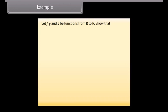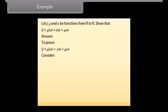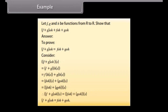Example: Let f, g, and h be functions from R to R. Show that (f + g)∘h = f∘h + g∘h. Answer: To prove, (f + g)∘h = f∘h + g∘h. Consider (f + g)∘h(x), which equals (f + g)(h(x)). On solving, we get (f + g)∘h = f∘h + g∘h. Hence proved.